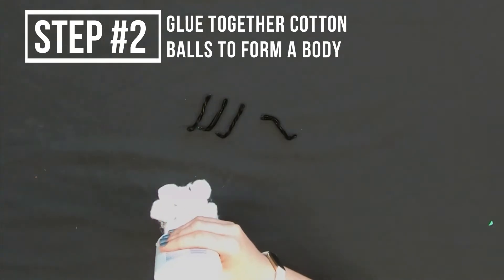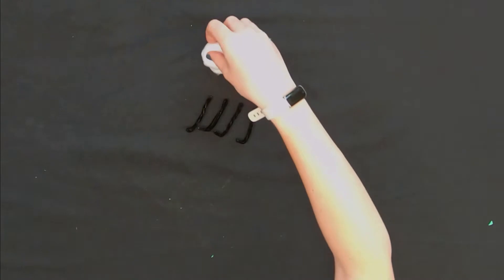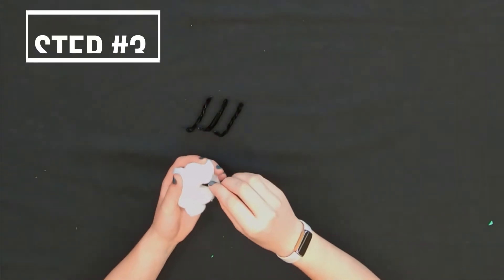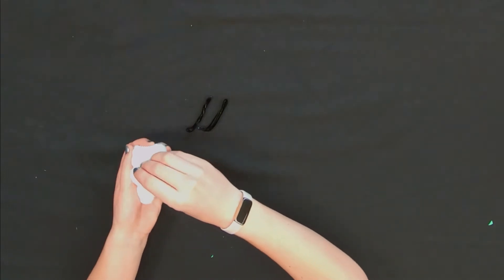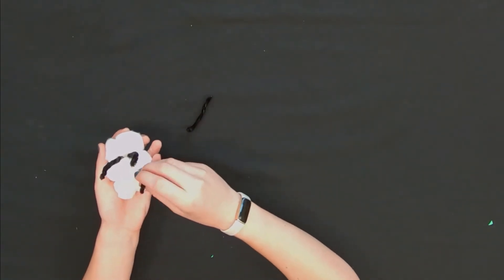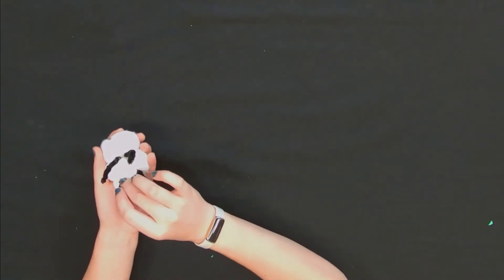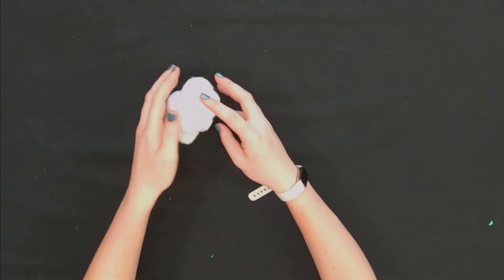The next step is going to be to take some glue and your cotton balls and glue them together in a big blob to make the body. Then we're going to take those legs that we just made and put them inside while the glue is still wet. Now you have a sheep body.